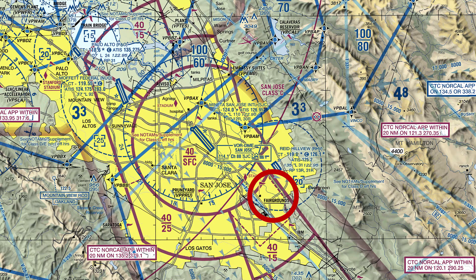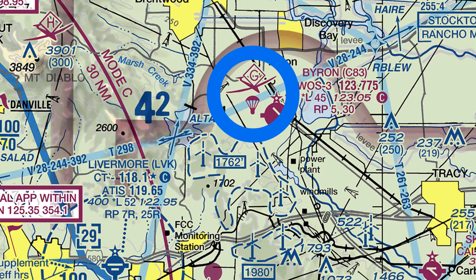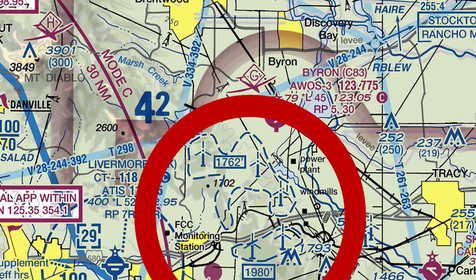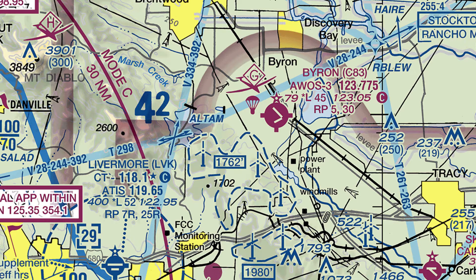Around San Jose you'll see flags with underlined names — those are VFR checkpoints. If ATC tells you to report over 'fairgrounds,' that's what they're referring to. For Byron Airport there's a parachute symbol and a glider symbol — self-explanatory: skydiving and glider activity. Next to Byron there are also wind turbines depicted, with the northern area's highest point at 1,762 feet and the southern area at 1,980 feet.